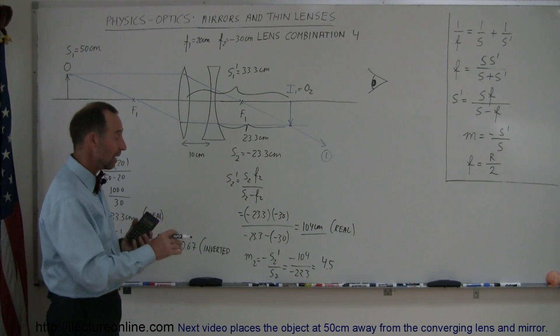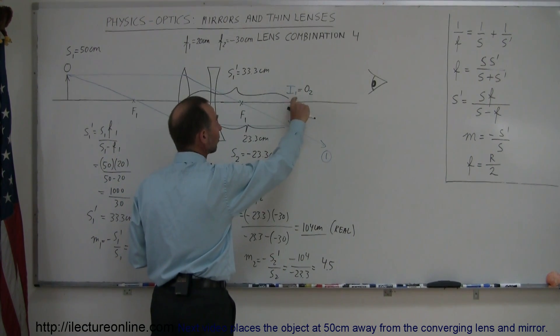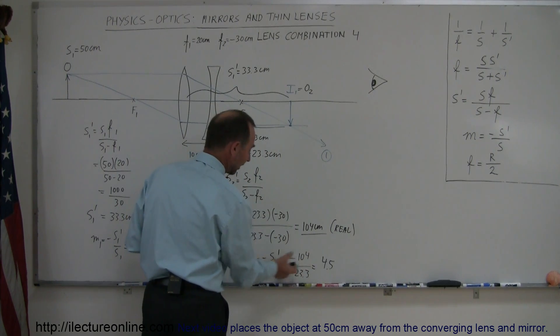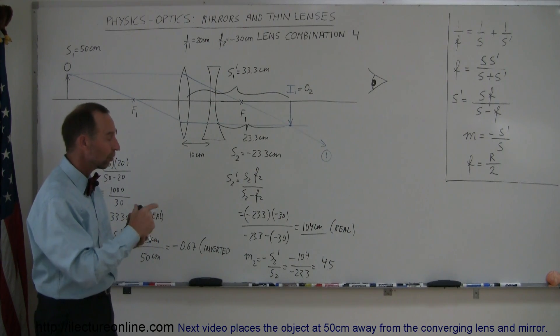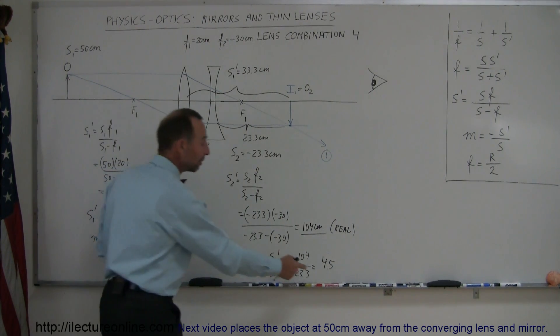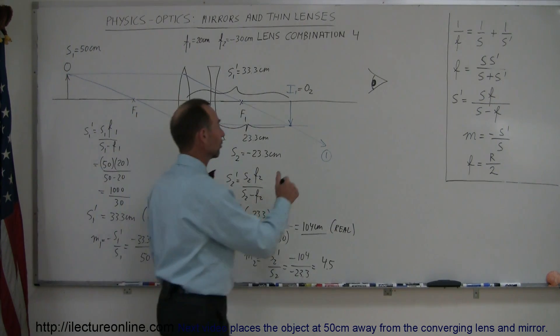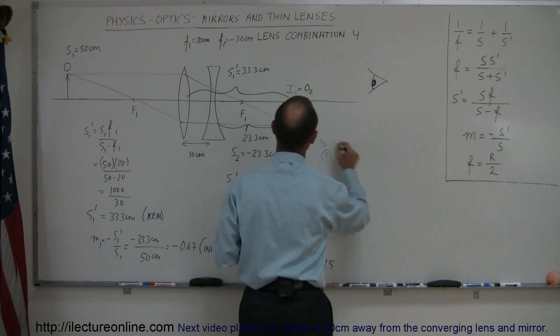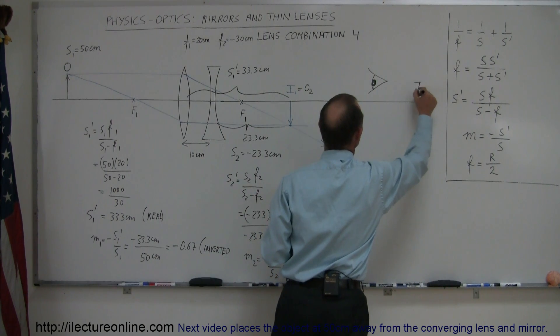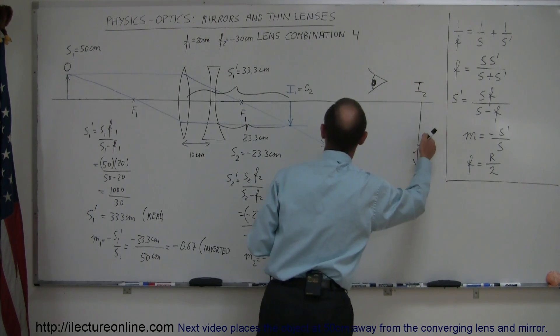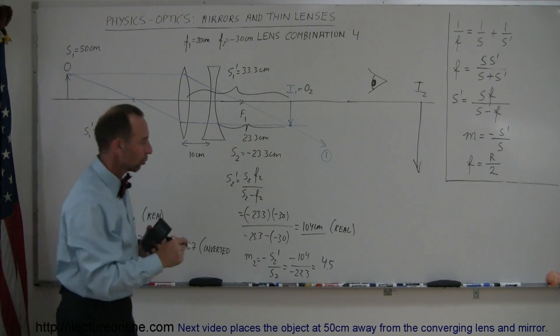The first inclination is to say that means it's an upright image, but it's not. Since the object was already inverted as the image of the first lens, the second image is in the same direction as the second object and therefore will also be inverted. But it will be four and a half times the size of the second object, which was of course the image of the first lens.